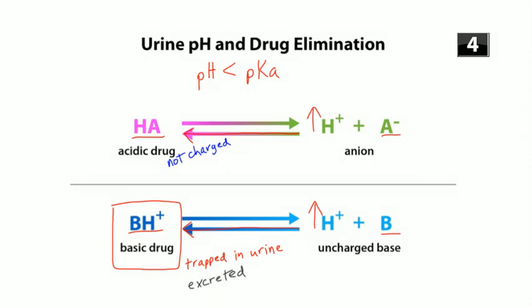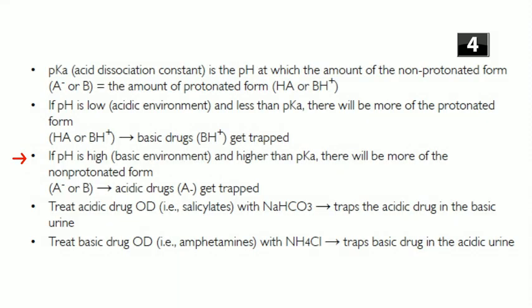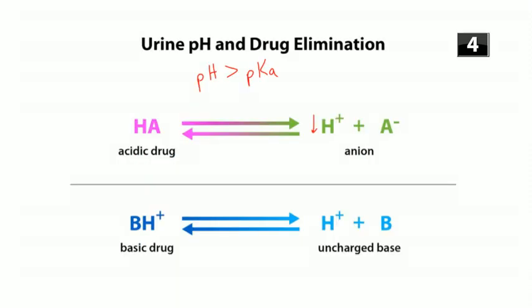Basic drugs can't cross the plasma membrane when trapped in acidic urine, so they stay and get excreted. When the pH is higher than the pKa, there's more of the non-protonated form — weak acids will have a charge and weak bases will be uncharged. In alkaline urine, acidic drugs are trapped and excreted, while basic drugs can be reabsorbed.